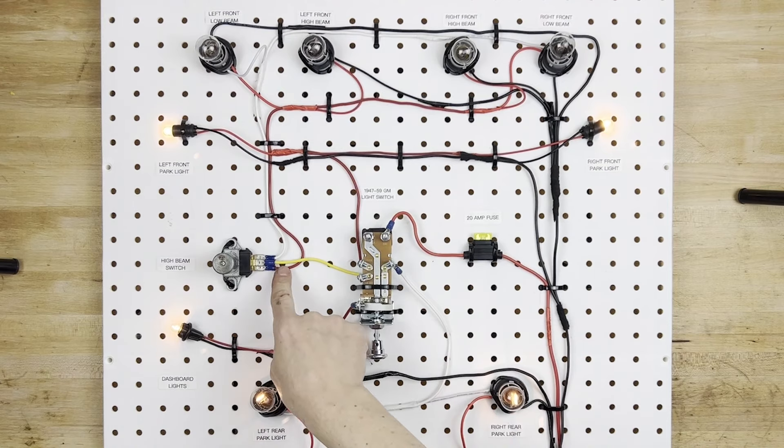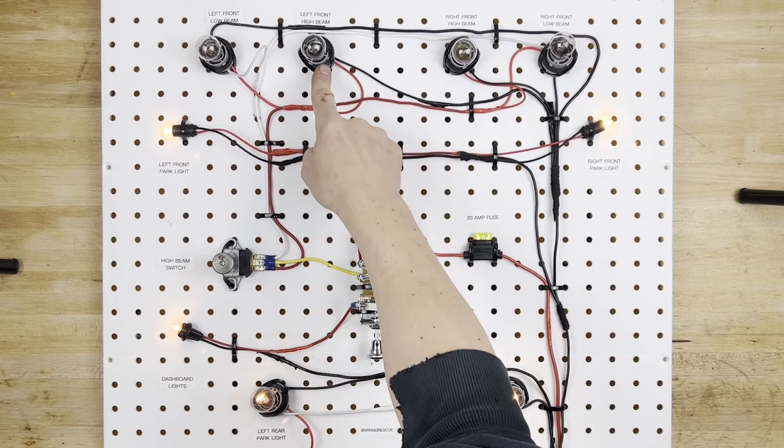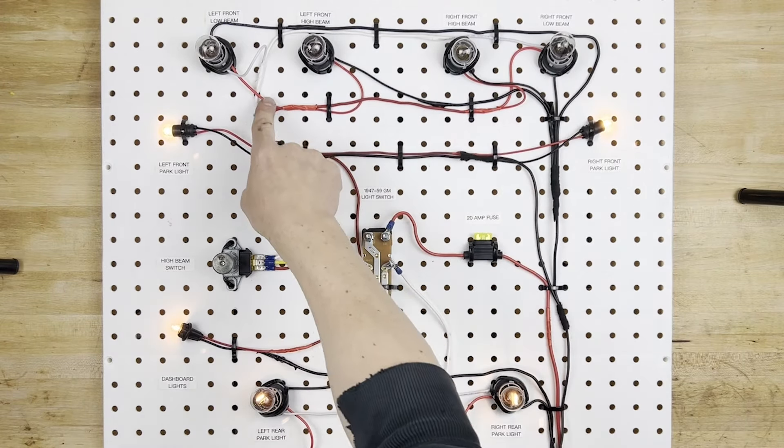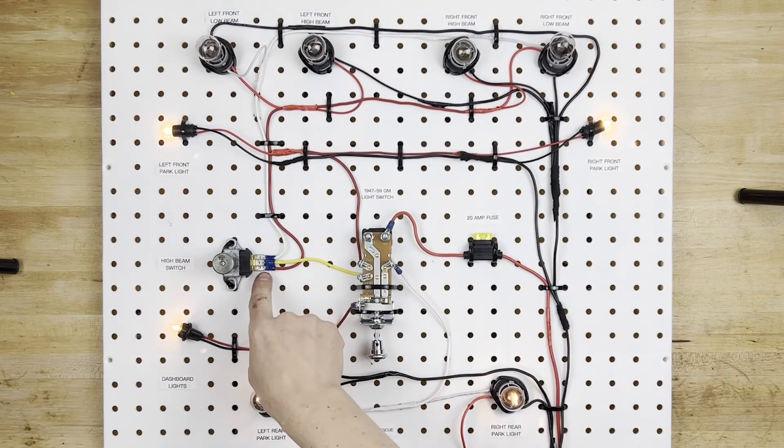And then we have the red wire, which is on the bottom side here, which goes out, and it connects to all four of the headlights, the red wire on all four headlights. So that's going to be your high beam wire.